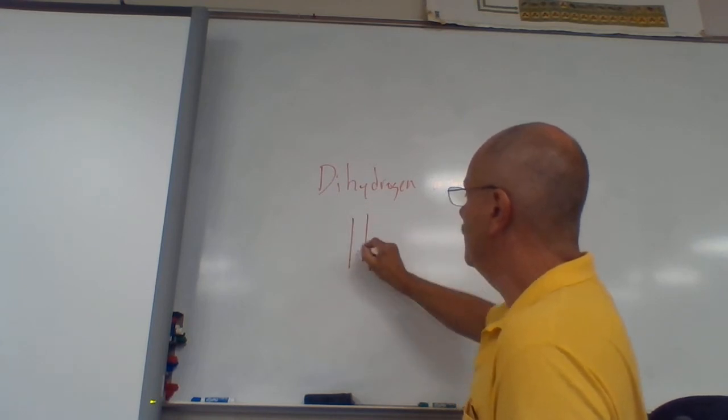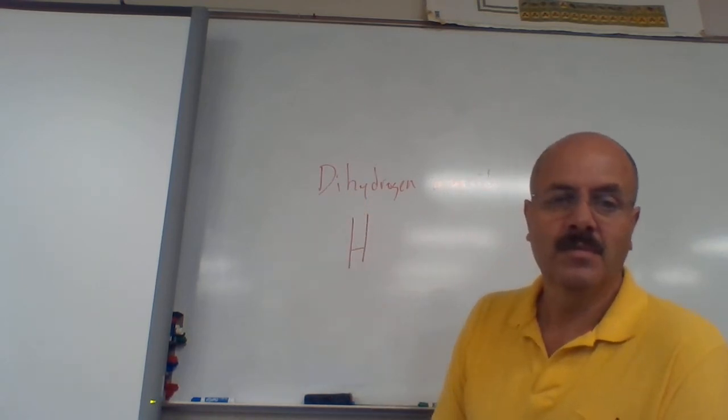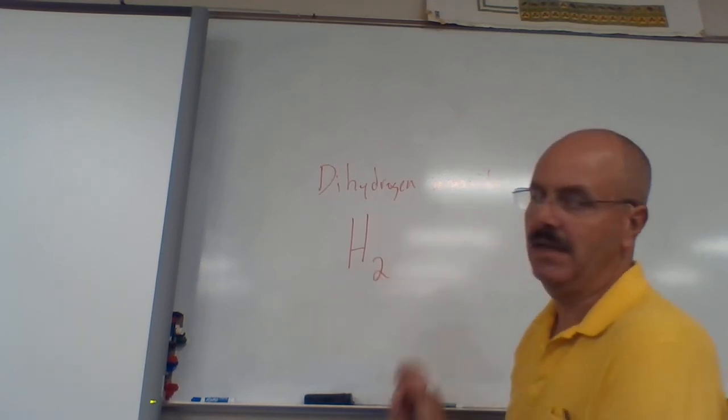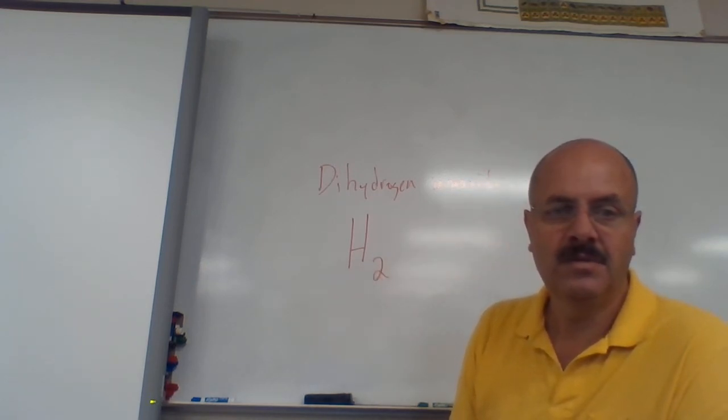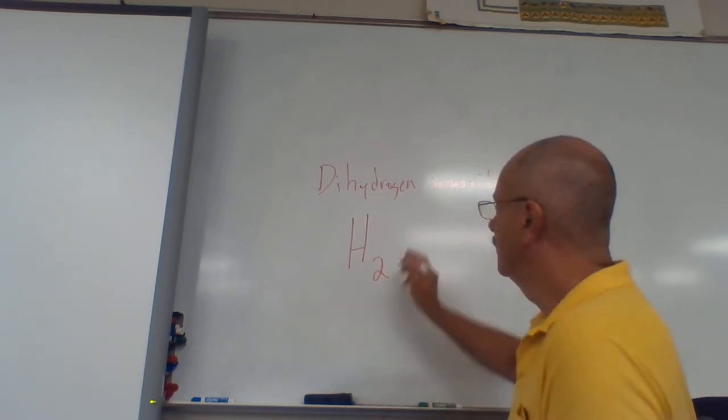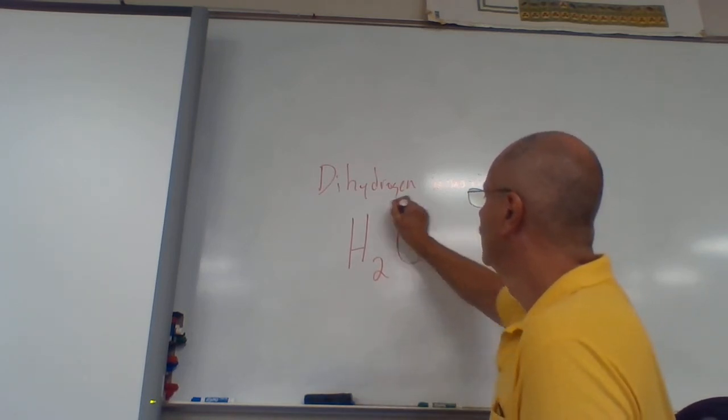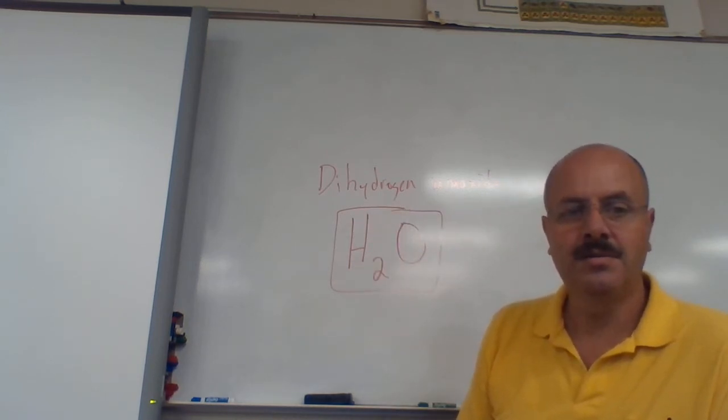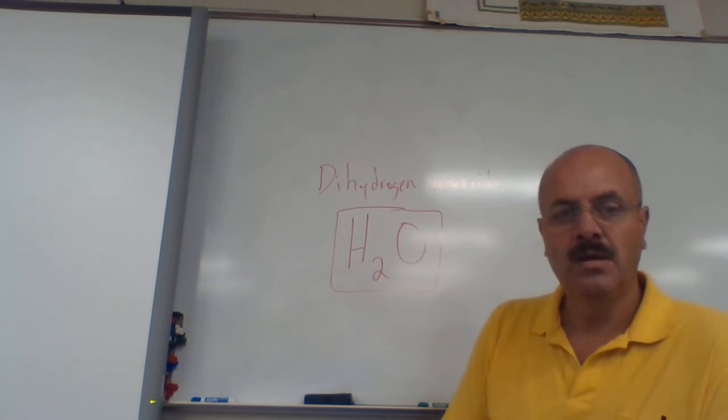The first one is hydrogen, so it's H. And how many are there? Well, it's a di, so di means two. What's the second element? The second element is oxygen. And how many are there? It's mono, so it's one.